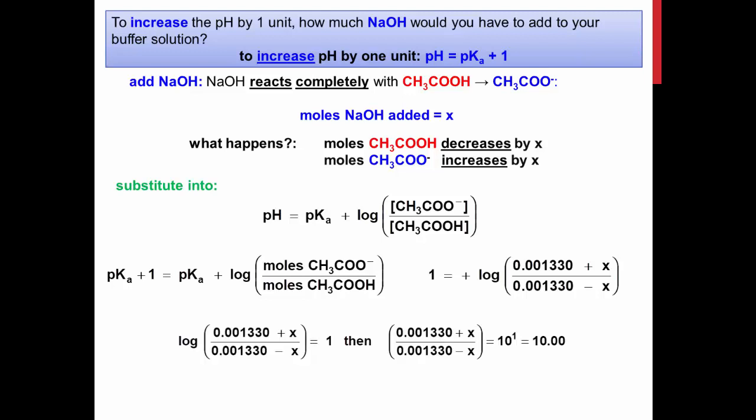The pKa values on either side cancel, leaving you with the log of the moles of acetate plus x divided by the moles of acetic acid minus x being equal to one.